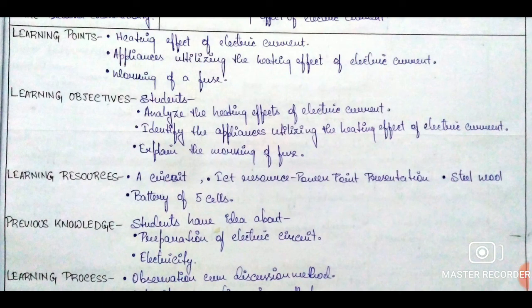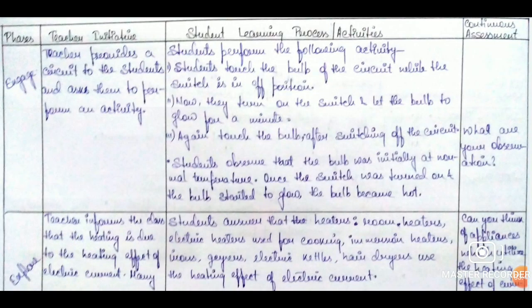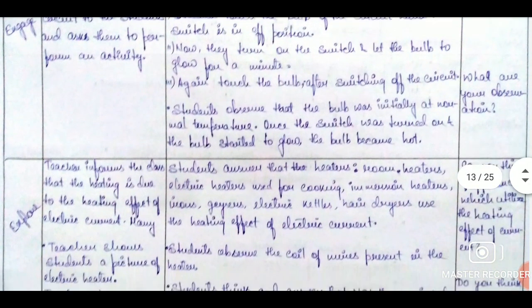After learning points, we write the learning objectives that are going to be fulfilled. Then learning resources, then previous knowledge, and finally learning processes. This is a 5E lesson plan, so we begin our table with engage. Performing certain activities or simply telling a story or recalling the previous day's class is a good way to engage students in order to gain their attention.